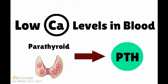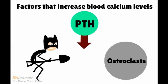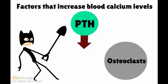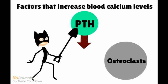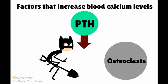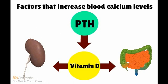When the body has low blood calcium levels, the parathyroid gland reacts by secreting parathyroid hormone, also known as PTH. PTH increases blood calcium levels by activating osteoclasts, which are responsible for breaking down bone to release calcium from the bone into the bloodstream. PTH also activates vitamin D, and vitamin D increases the amount of calcium absorbed through the kidneys and through the small intestine. So parathyroid hormone, or PTH, acts to increase calcium levels in the blood.